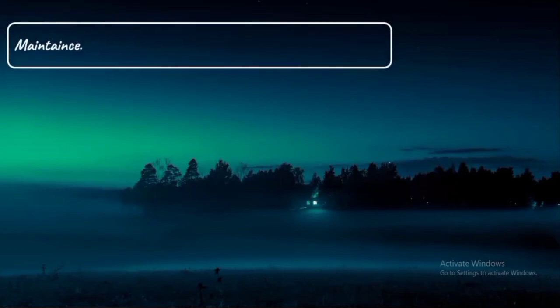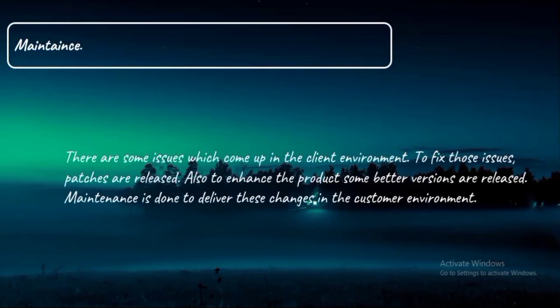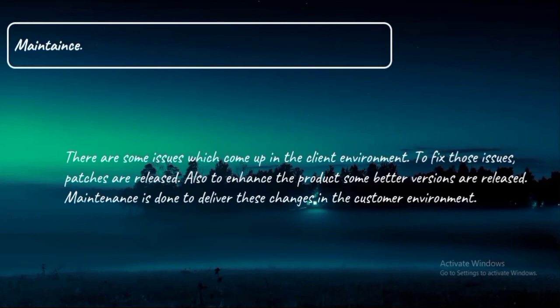The last phase of the waterfall model is maintenance. Some issues come up in the client environment after release; to fix those issues and to enhance the product, better versions are released through maintenance. For example, after a project is successfully installed at the customer site, if the customer faces issues two days later, they will call the developer or the maintenance department for help. The maintenance department then provides the exact solution to the customer's raised issue.